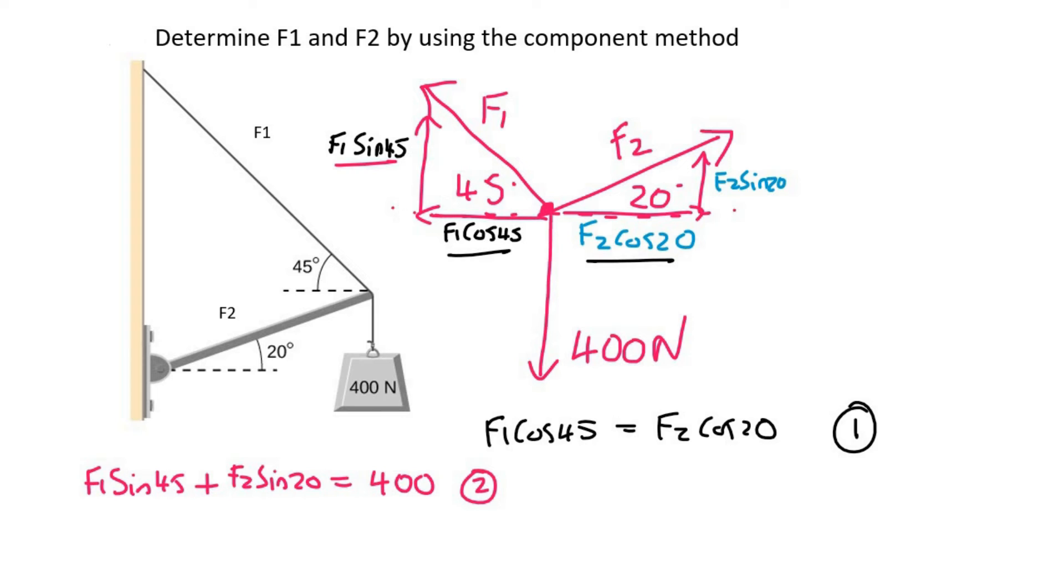So what we can do is try to get F1 or F2 alone. So I'm going to take this equation and I'm going to get F1 by itself. I do that by simply dividing by cos 45. There we go, I now have F1 by itself. I'm now going to take that and plug it into F1 over here.